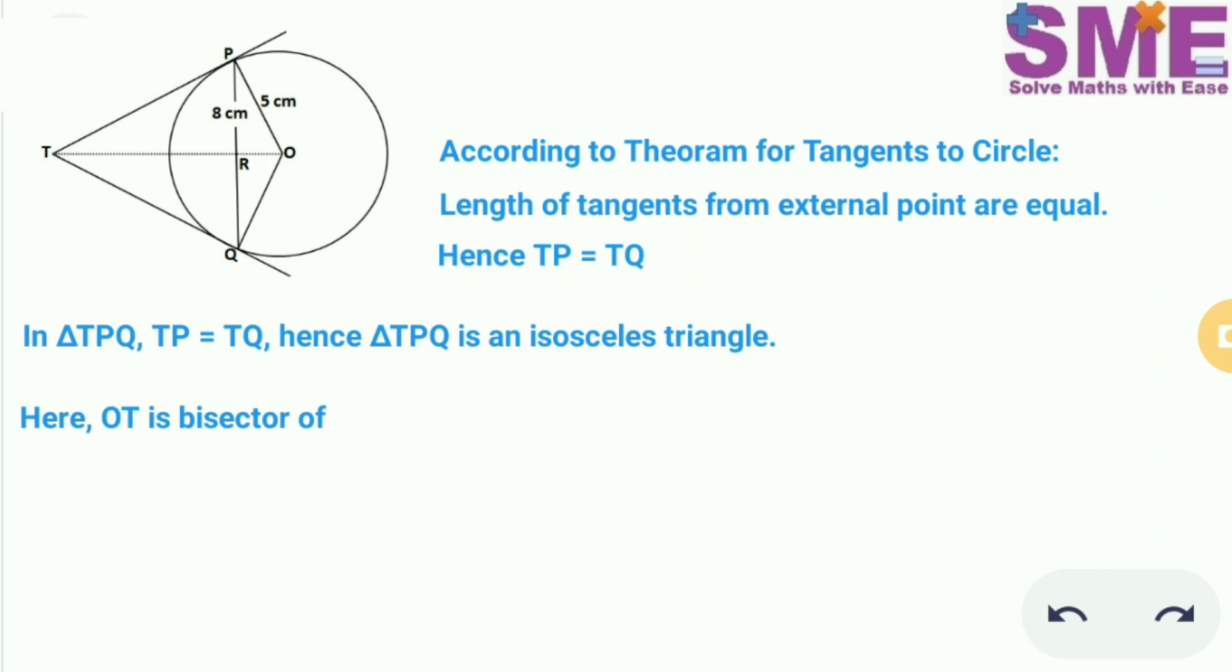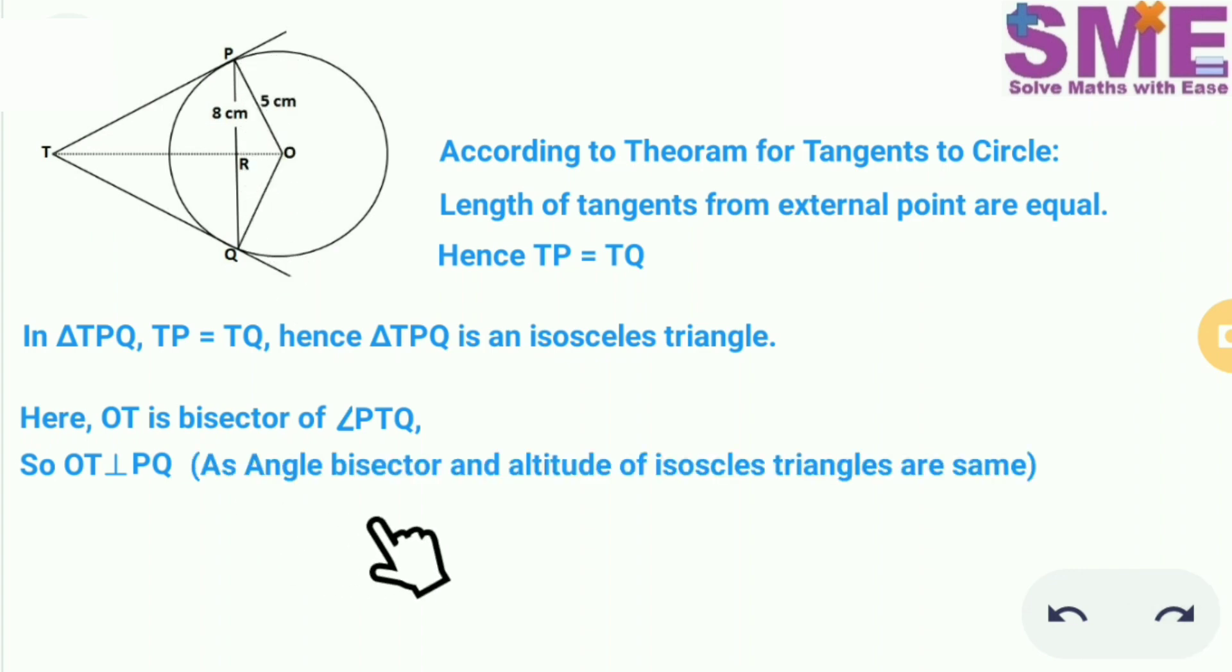Here OT is bisector of angle PTQ. So OT is perpendicular to PQ. Here you can see that line OT is perpendicular to PQ because angle bisector and altitude of isosceles triangles are same.